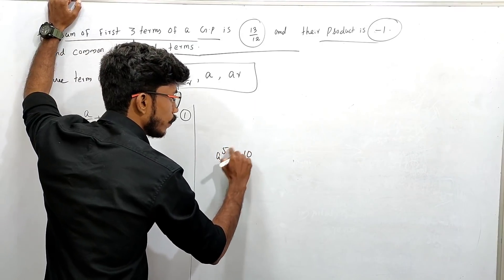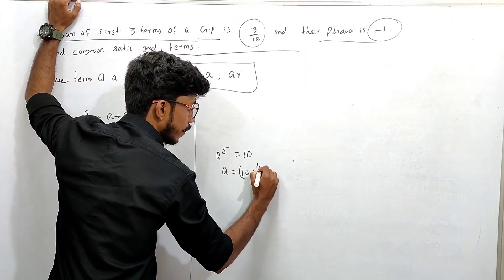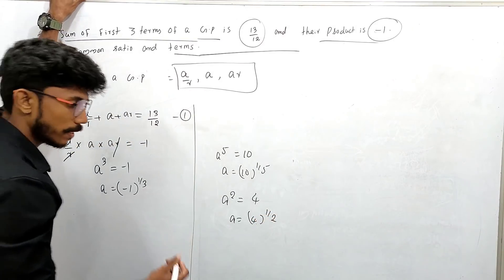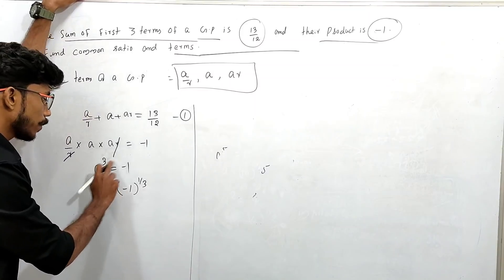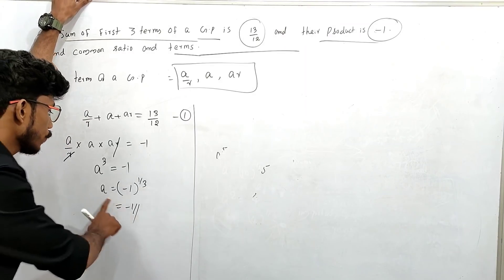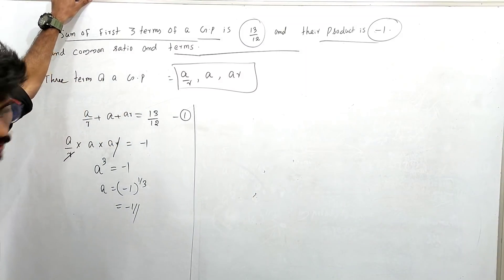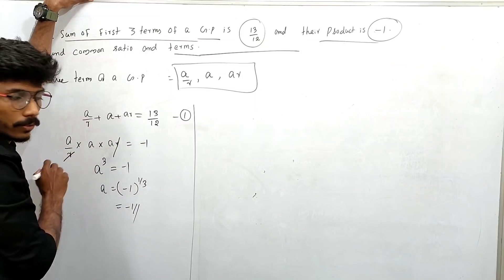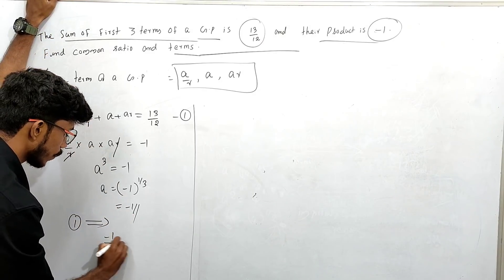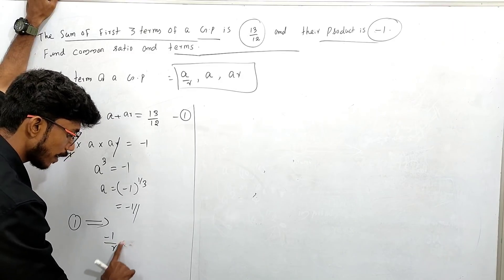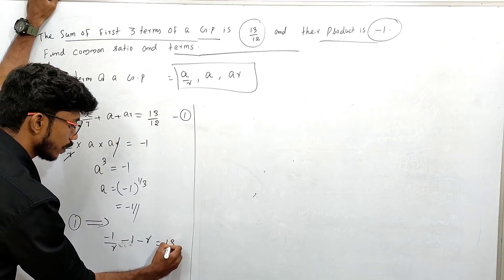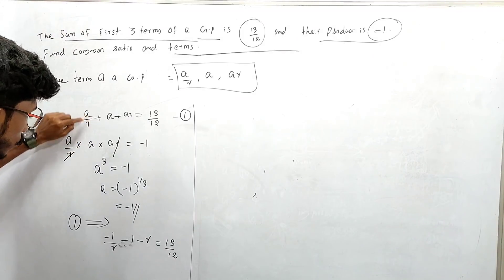So A equals minus 1. We get this equation equal to minus 1. Now substituting A equals minus 1 into the sum equation: minus 1/R minus 1 minus R equals 13 by 12. This equation gives us minus 1 by R minus 1 minus R equals 13 by 12.